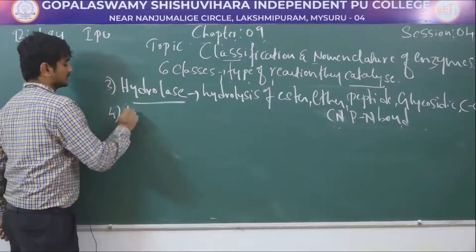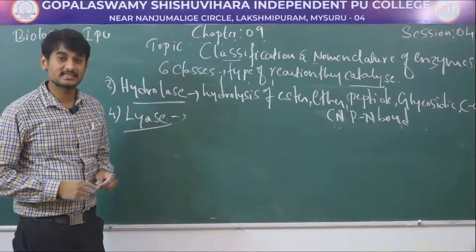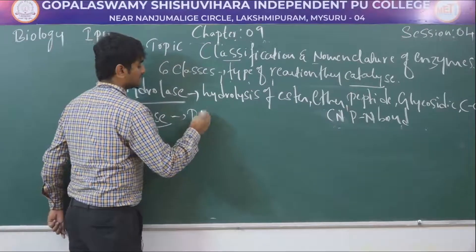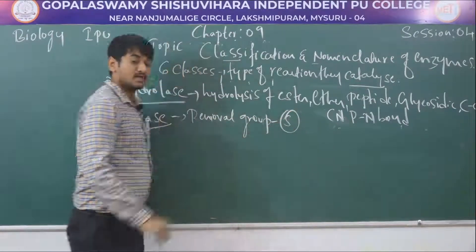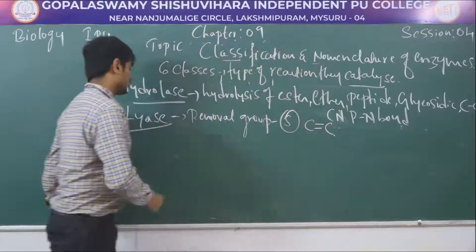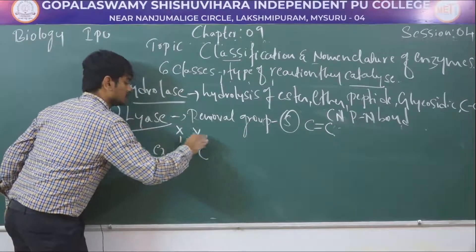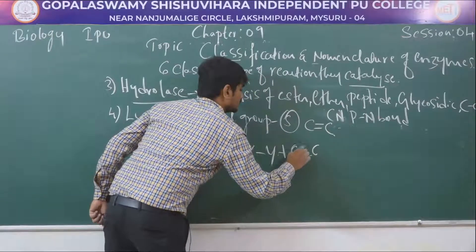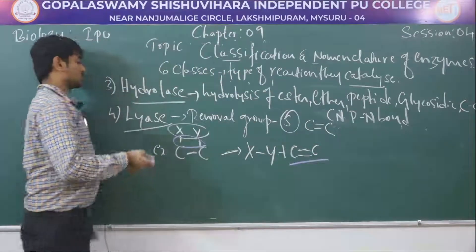The fourth one is lyase. The lyase enzyme catalyzes the removal of groups from a substrate by a mechanism other than hydrolysis, leaving a double bond. X and Y are the functional groups. Removal of these groups forms a double bond.